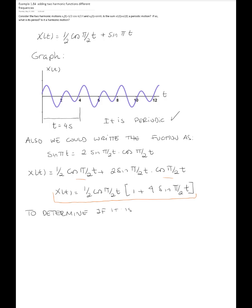The first derivative x dot of t equals negative one half sine of pi over two t, and the internal derivative is pi over two, plus cosine of pi t, and the internal derivative is pi.